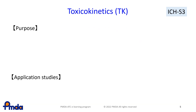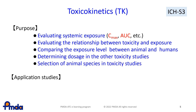Next, toxicokinetics is described in the ICH-S3 guideline. The purposes of blood concentration measurements of test substances in toxicity studies are as follows: systemic exposure after test substance administration to animals is obtained, and the data is then used for various evaluations. First, the relationship between the onset of toxicity and systemic exposure is assessed. The systemic exposure levels in humans and animals are compared, and such results are used as evidence to determine the dosage for further toxicity studies.